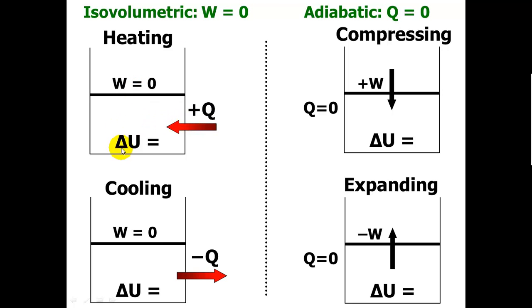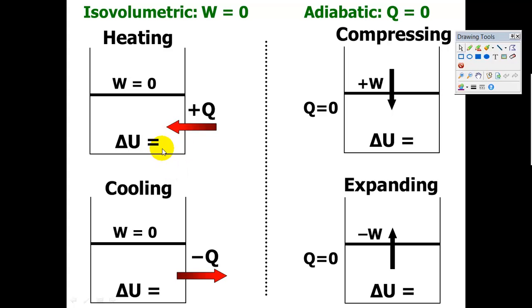If we have heat coming in, how is that going to change the internal energy of the molecules? Will it be a positive change getting hotter, or a negative change getting cooler? Hopefully you recognize that would be a positive change. If we have heat leaving, that means that the gases are getting cooler. That would be a negative change.